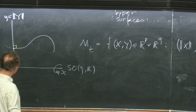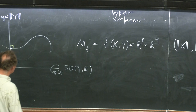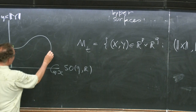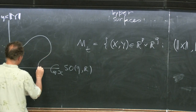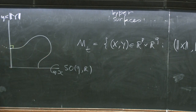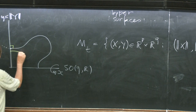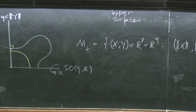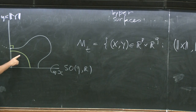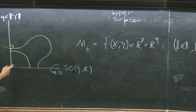Those are the boundary conditions. In particular, if you take a quarter circle, the corresponding surface will be a sphere.